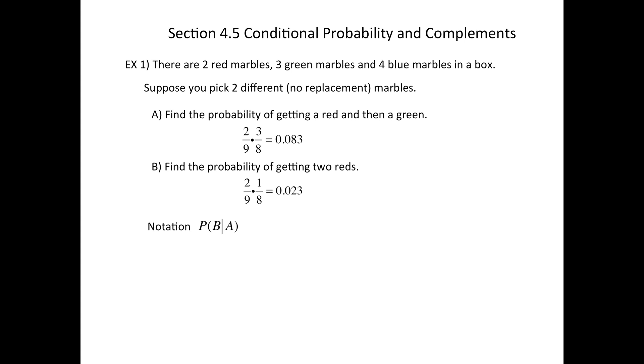The next definition is the conditional probability. So what this vertical line right here means is that event A has already occurred. So it's asked, can you find the probability of B given that A has already occurred?